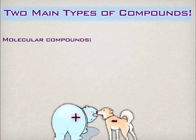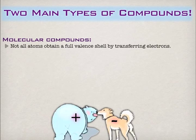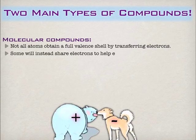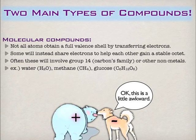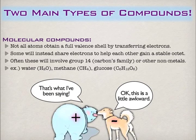The other type of compound is a molecular compound. You don't necessarily have to transfer electrons to get a full outer shell — you can share. This often involves group 14, carbon's group, or other nonmetals. Classic examples of molecular compounds are water, methane, and glucose. The neat thing about a molecular compound is that it's WYSIWYG — what you see is what you get. Water means H₂O; methane means CH₄. With ionic compounds like salt we're actually talking about a much larger ratio, but that's how we describe them.